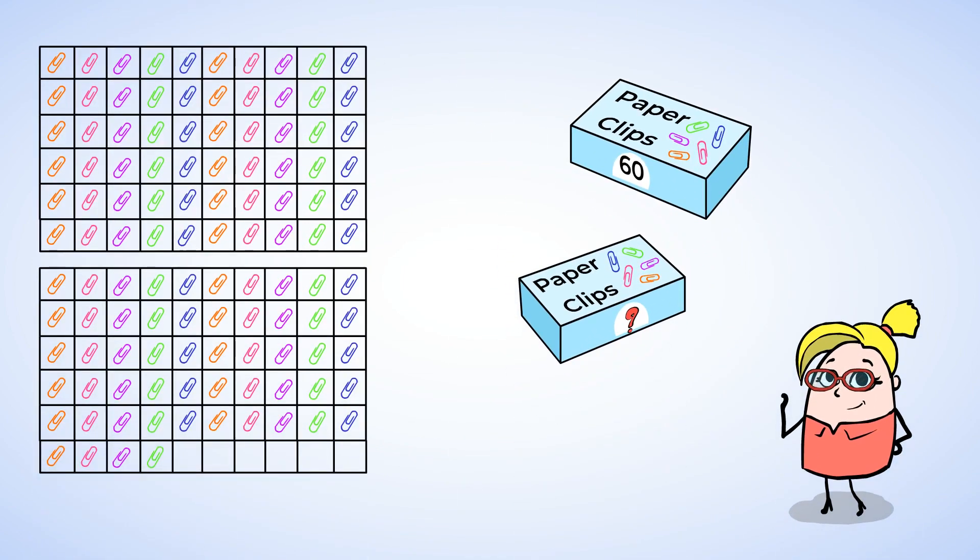And next up are the paper clips. Looks like there could be more than 100. Let's count them up. Now there are already 60 paper clips in this box, so we don't need to count those. We can just start from 60 and count by tens.